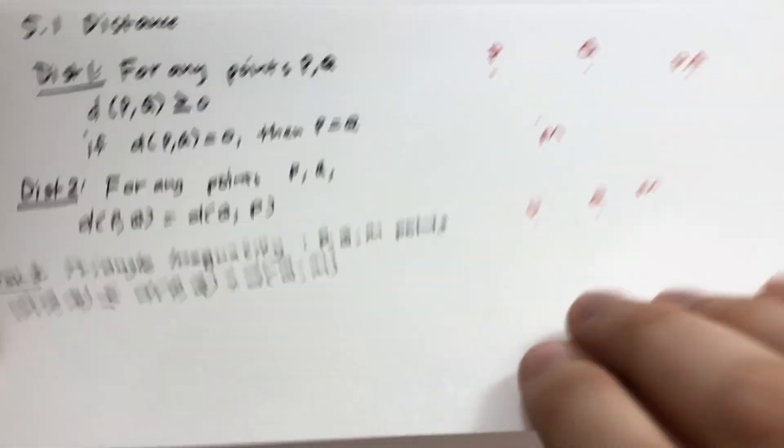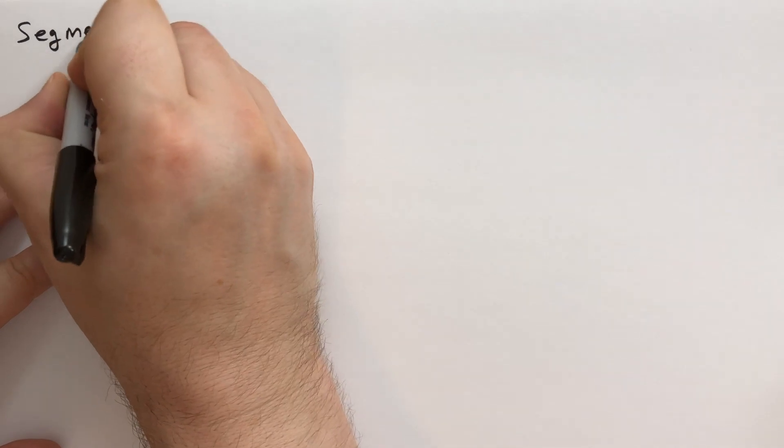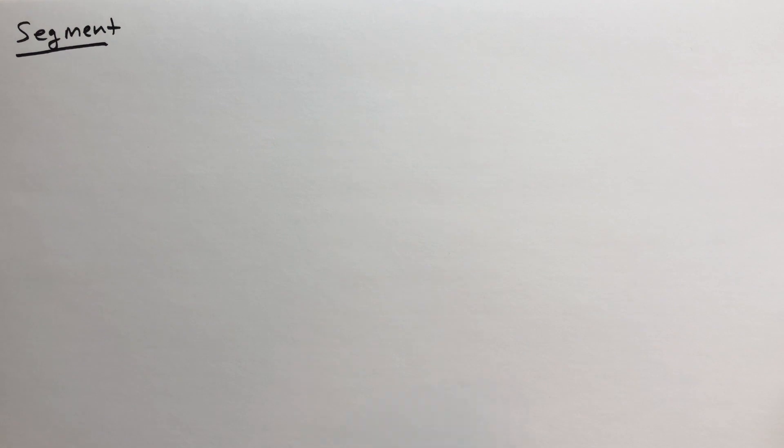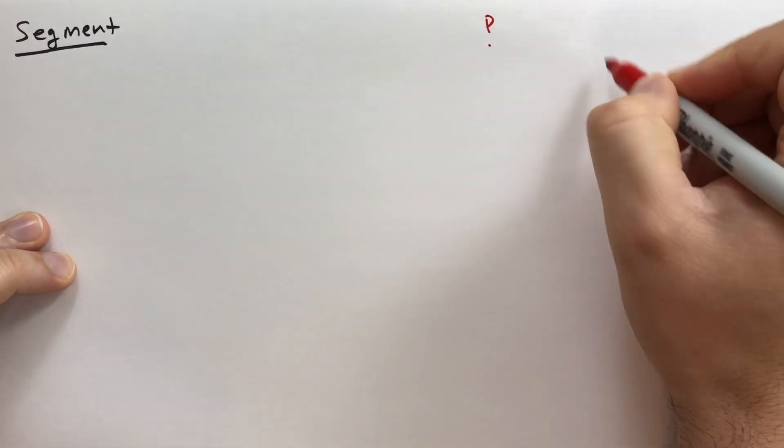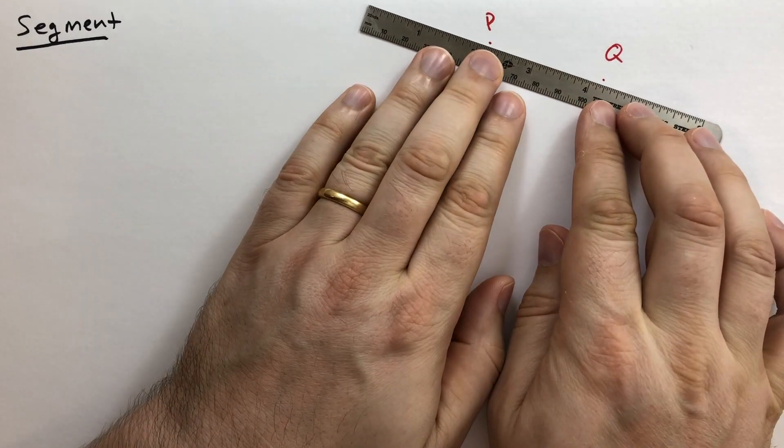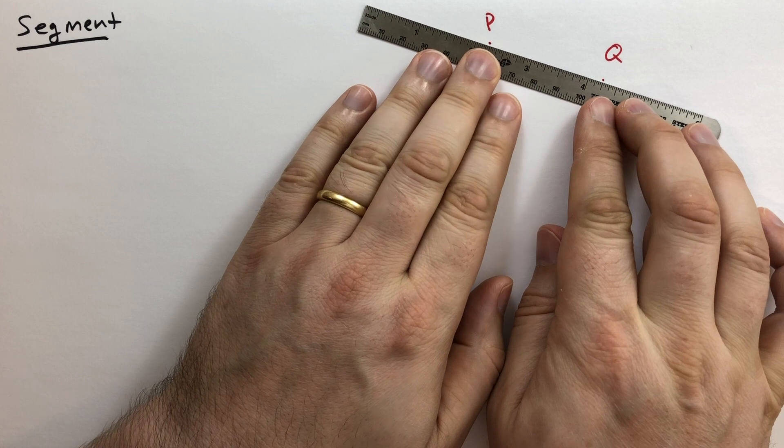We'll do it by introducing something called a segment. In geometry, we have lots of things and they each have a unique and meaningful name. So segment, whenever you see segment, this is what a segment is. So a segment, if we take two points, P and Q, let's put Q over here. Then there exists a unique line between points P and Q, as long as P is not Q.